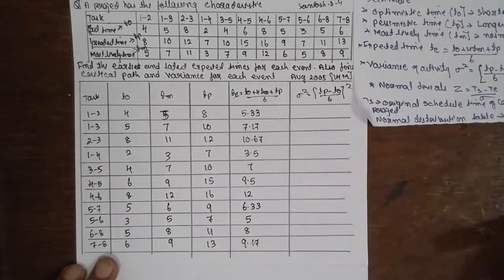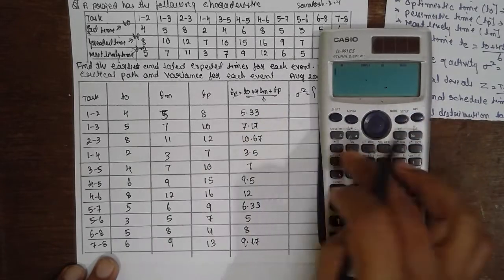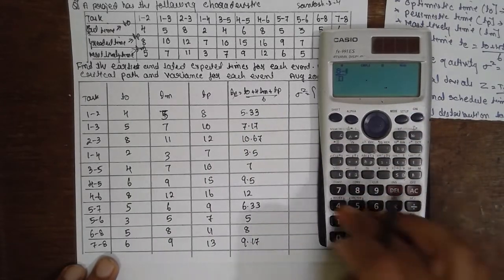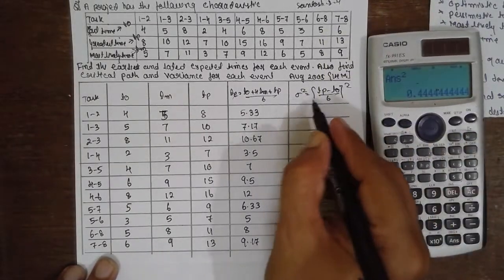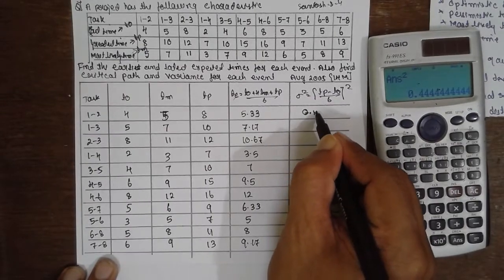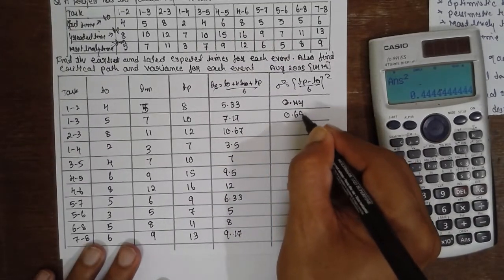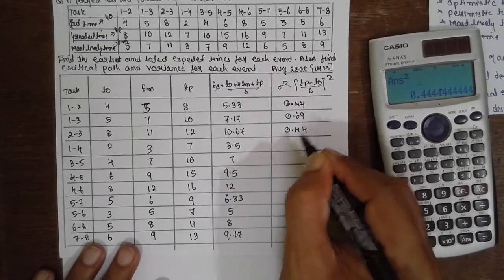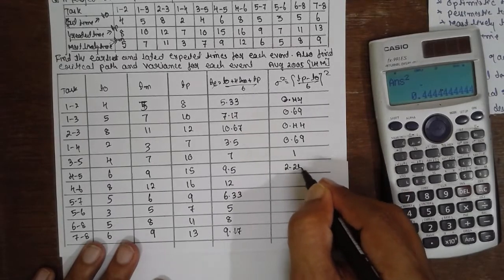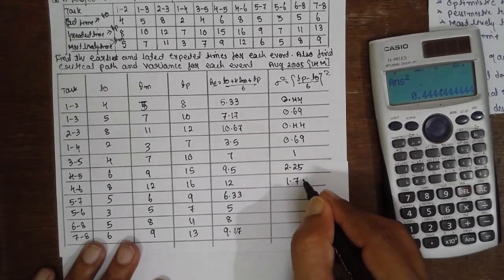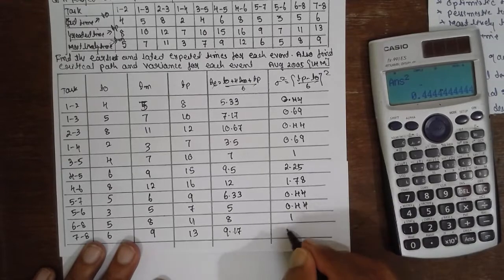To get the variance, the formula is (Tp - T0) / 6, whole square. For example, (8 - 4) / 6 whole square = 0.44. Follow the same procedure for all rows. The variance values are: 0.44, 0.69, 0.44, 0.69, 1, 2.25, 1.78, 0.44, 0.44, 1, 1.36.